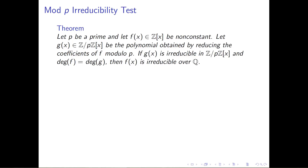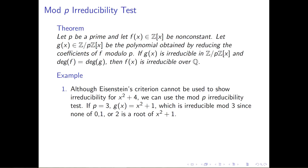If g of x is irreducible in Z mod p adjoined x, and if f and g have the same degree, then we can conclude that the original polynomial f is irreducible over the rational numbers. Again, this theorem sounds like a mouthful, but it's really nice and easy to apply in practice.